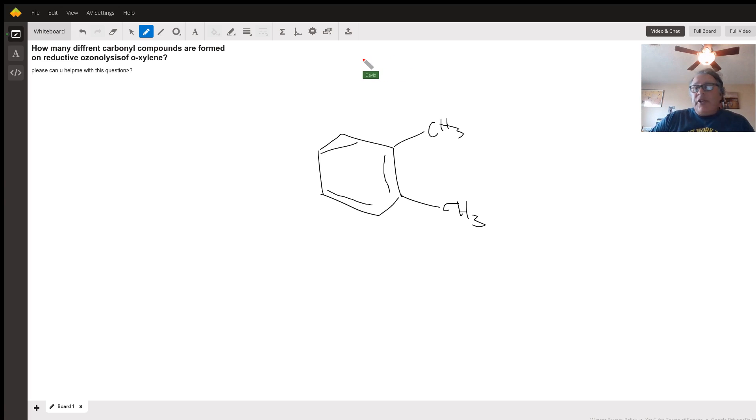Now, ozonolysis does what? Ozonolysis is a reaction between alkenes and ozone where the carbon double bond of the alkene is cleaved into two carbonyl compounds.